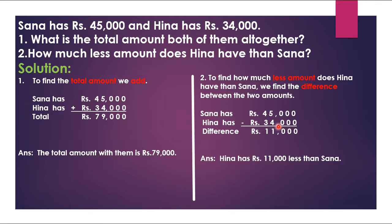We subtract rupees 34,000 from rupees 45,000, and we get the difference of rupees 11,000. It means that Henna has rupees 11,000 less than Sana. I hope students you understood how we write down story sum statements. Jazakallah.